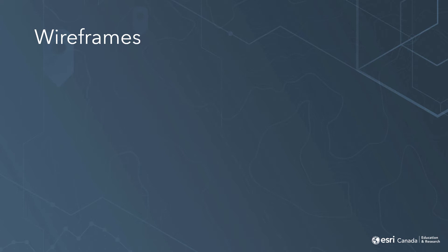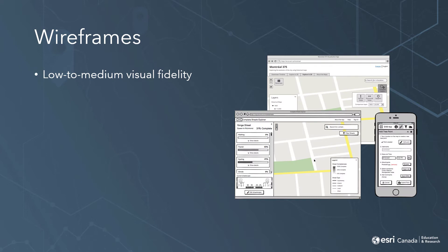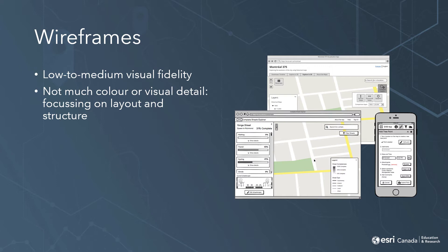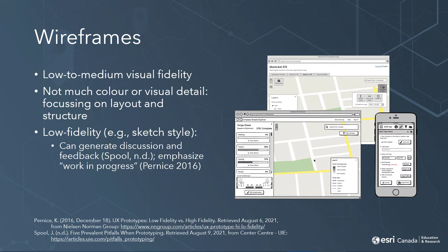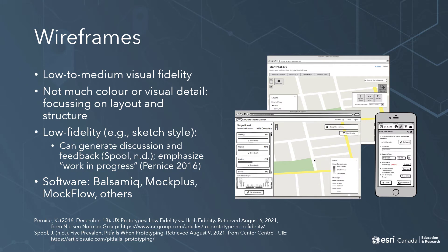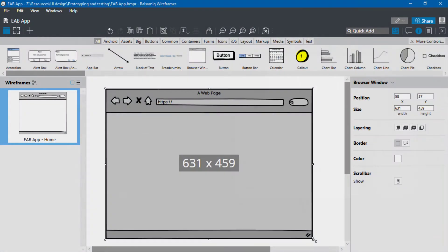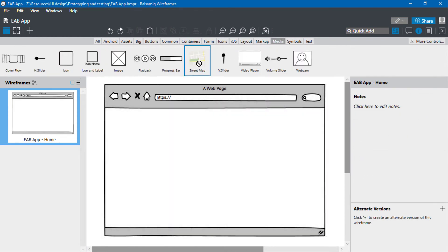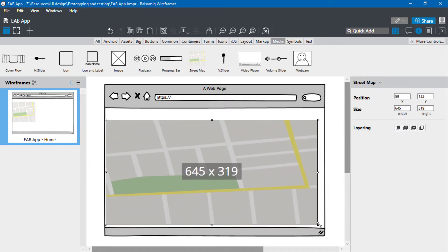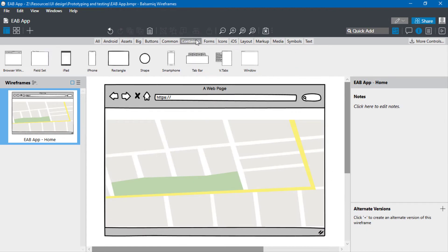Once you've done some sketching and found some ideas you want to focus on, you can start to develop these in more detail using wireframes. Wireframes can be considered anywhere from low fidelity to medium fidelity — they're a bit cleaner and more detailed than hand-drawn sketches, but still don't include all the visual detail of the final product. Because of this, wireframes are often compared to building blueprints. There are many programs available for wireframing, such as Balsamiq, which I'll be using for examples in this video, as well as Mockplus and Mockflow. Wireframing programs like Balsamiq provide UI templates you can drag and drop, making it much easier to focus on developing your ideas.